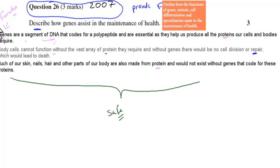But where did this come from? This came from this dot point: outline how the functions of genes, mitosis, differentiation, and specialization assist in the maintenance of health. In this case they just focused on the genes and ignored the other ones, but one of the other videos talked about a question which had mitosis and differentiation, whereas this question talks about genes, but it all came from the same dot point. Hopefully that was useful.